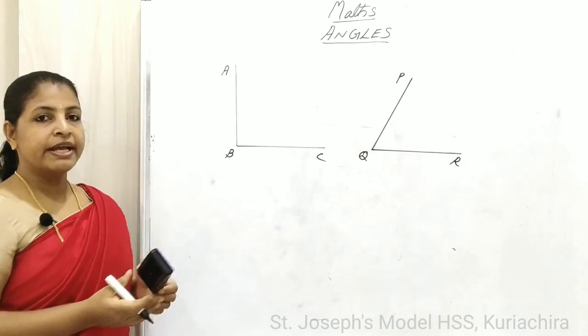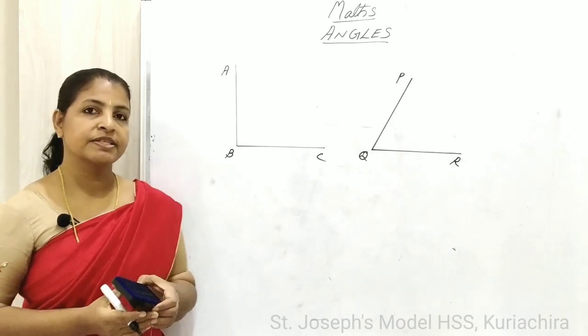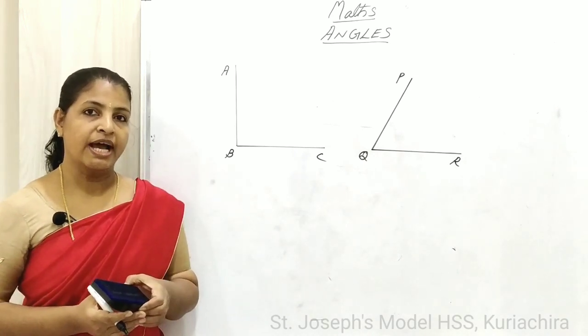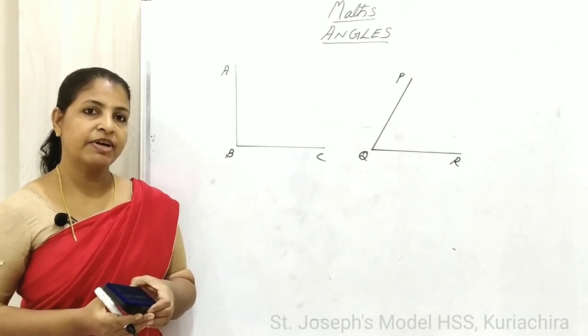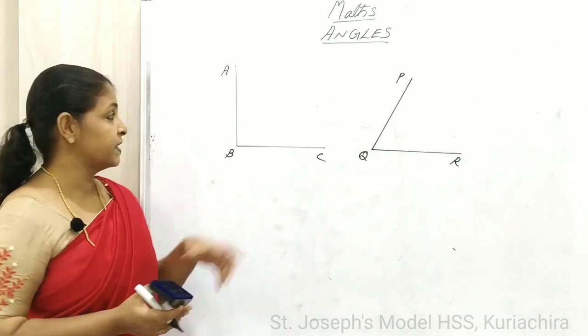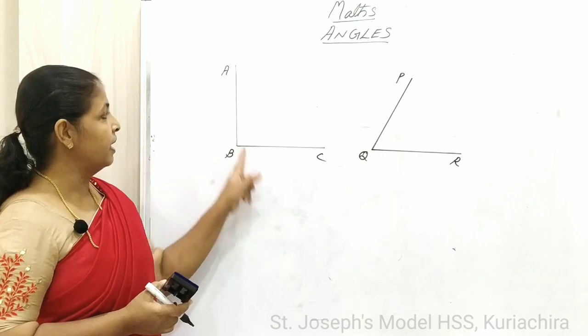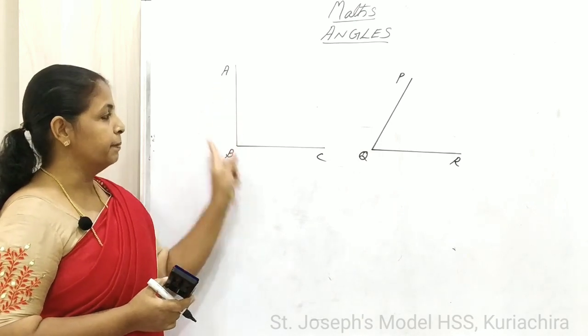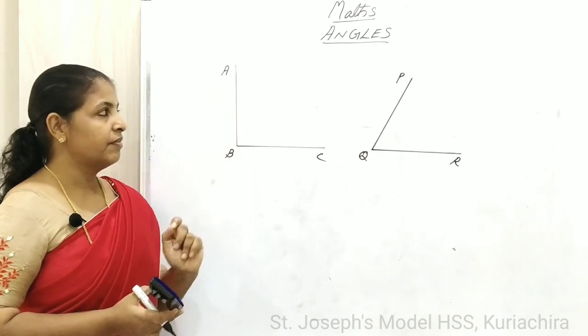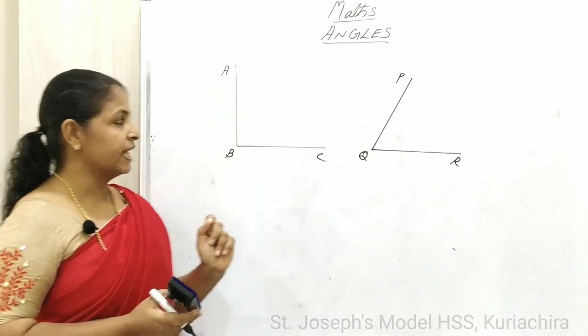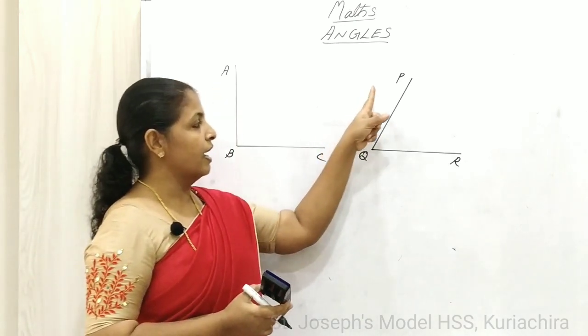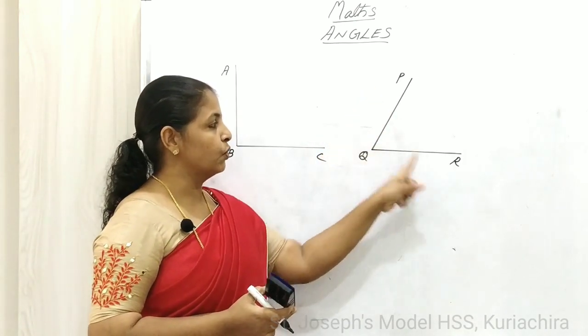We are using capital letters to denote angles. Then what is the name of this first angle? Angle A, B, C. What is the name of the second angle? Angle P, Q, R.